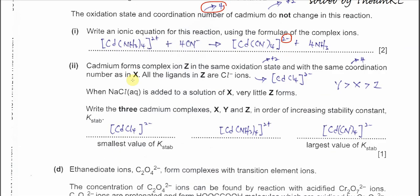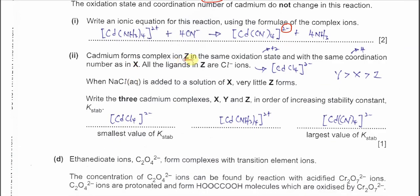Part 2: cadmium forms another complex ion Z in the same oxidation state, +2, and the same coordination number, 4, as in X. All the ligands in Z are chloride ions, so it forms [CdCl₄]²⁻. This complex Z is produced when sodium chloride is added to solution X.